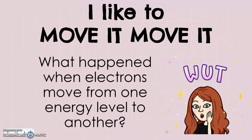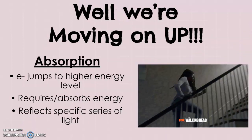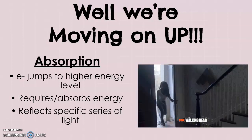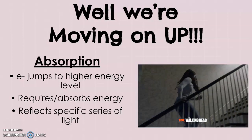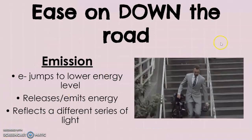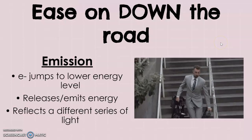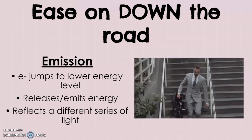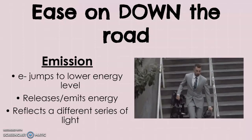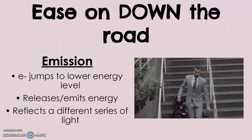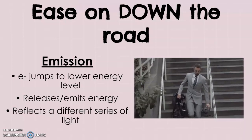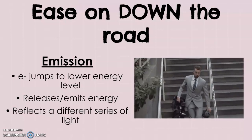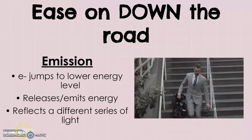What happens when electrons move from one energy level to another? This is called absorption — when an electron jumps to a higher energy level, it requires an absorption of energy, and this will reflect a specific series of light, which we'll discuss more when we talk about the electromagnetic spectrum. When those excited electrons come back down from high energy levels, this is called emission. When emission happens, energy is released in the form of light — either infrared, UV, or visible light that we can see with the naked eye — and we'll talk about that more later.